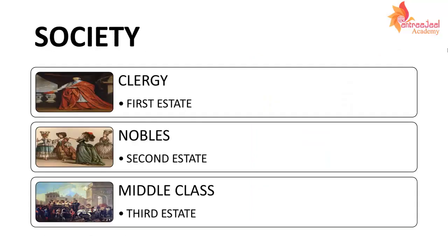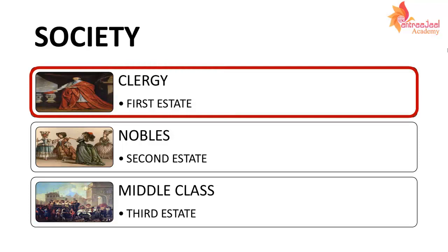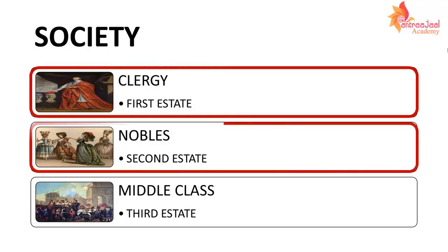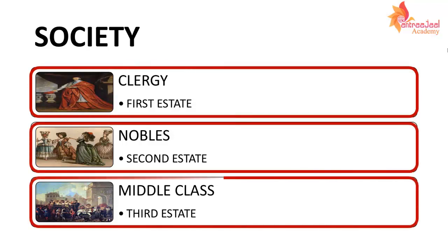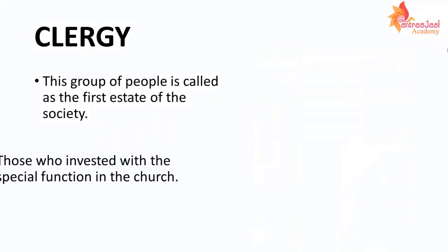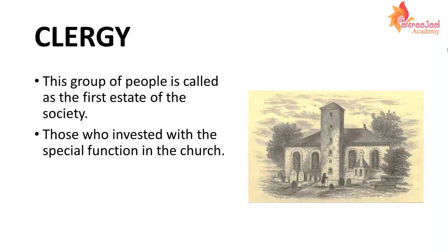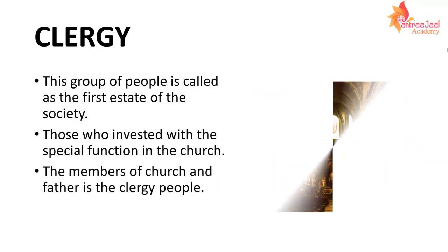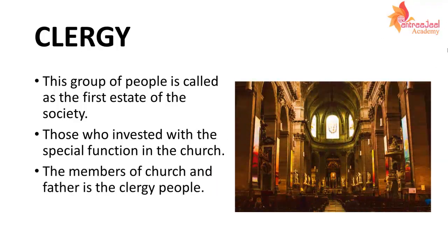अब हम बात करते हैं society के। France की society 18th century में 3 parts में divided थी — first थी clergy, second nobles, और third middle class। इन्हें हम estates के नाम से भी बोल सकते हैं। First state यानि clergy — ये लोग अपना ज़्यादा से ज़्यादा समय church के functions और कामों में बिताते थे, जैसे fathers या other church के people। और इन्हें कोई tax pay नहीं करना पड़ता था।